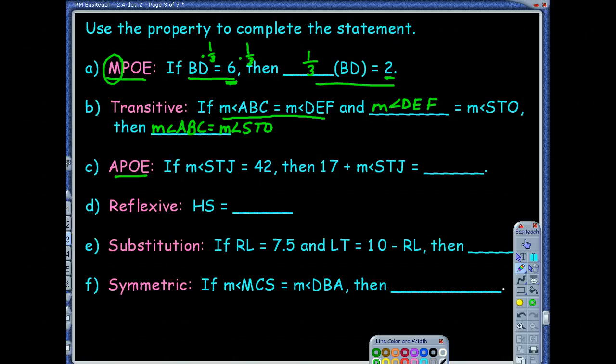APOE. That means I'm going to add something to both sides. Oh, look at that. They've already said 17 plus the measure of angle STJ. So that means this equation here, I had to start by. So they've already just added 17 to one side. So if I add 17 to one side, I'm going to have to add it to the other side to keep it balanced. So if I add 17 to 42, I'm going to get 59.